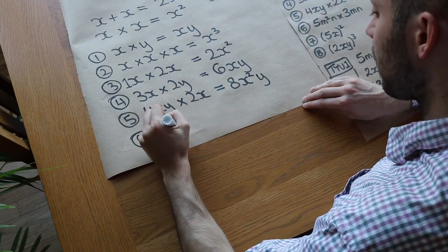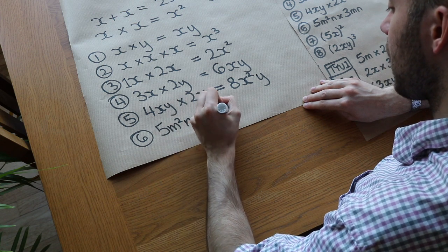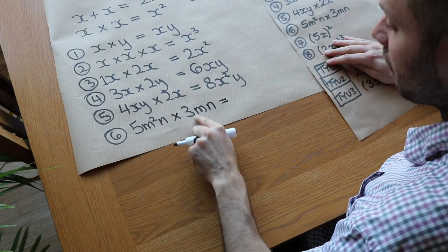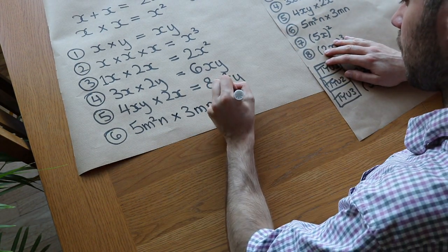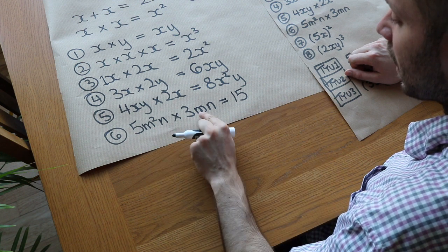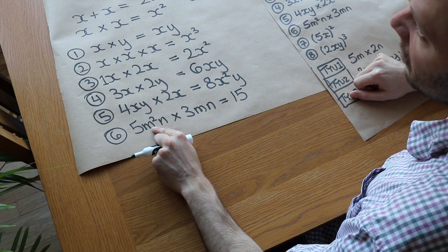And then question six. We've got 5m squared n times by 3mn. Again, start with the numbers on the front. So we've got 5 times 3. That is 15. And then we do the variables in alphabetical order. So we've got m squared times m. If you think about it, m squared means m times m, doesn't it?